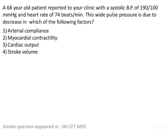A 60-year-old patient reported to your clinic with a systolic BP of 190/100 mmHg and heart rate of 74 beats per minute. The BP is 190 systolic and 100 diastolic, and the heart rate is 74 beats per minute. This wide pulse pressure is due to a decrease in which of the following factors?